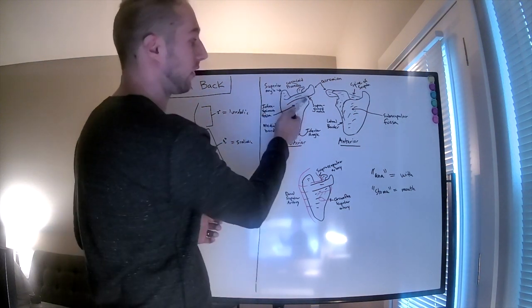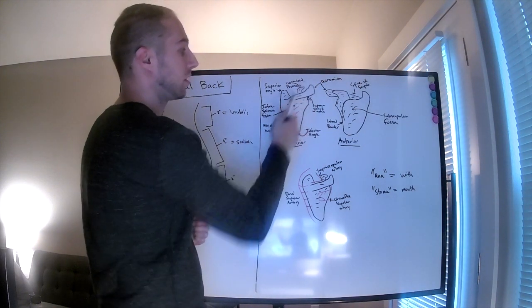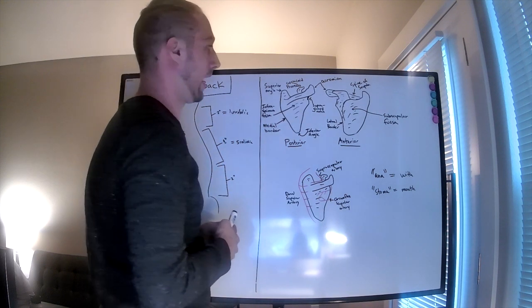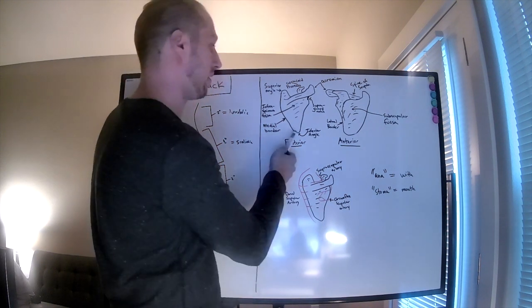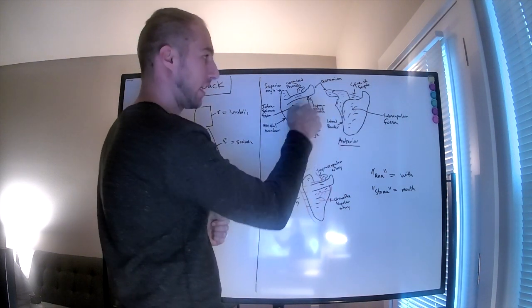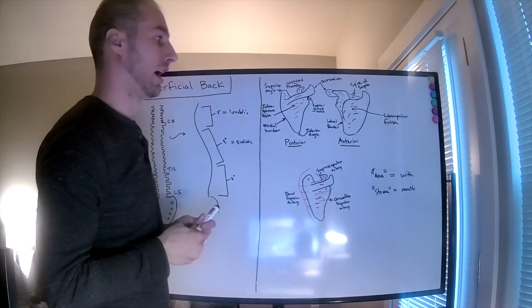The supraglenoid notch, which is in relation to the shoulder joint itself. The inferior angle and then back here the subscapular fossa, and that'll come into play later on.